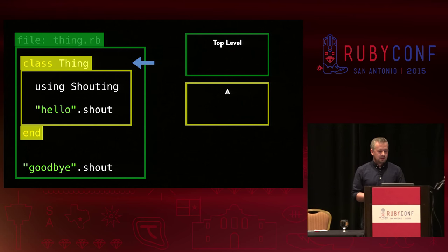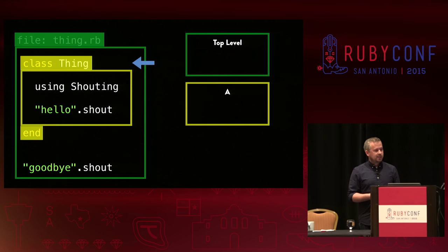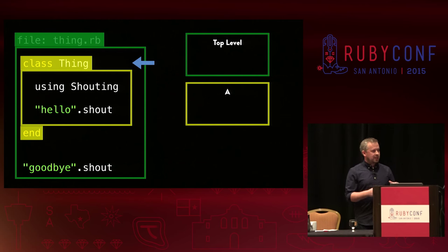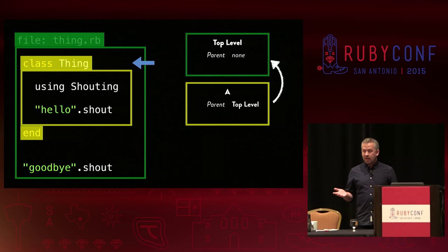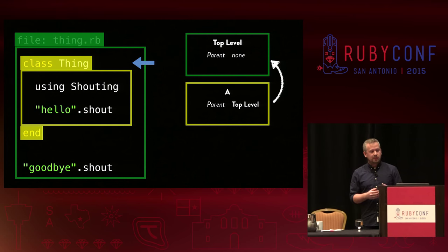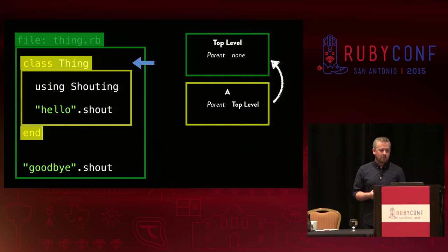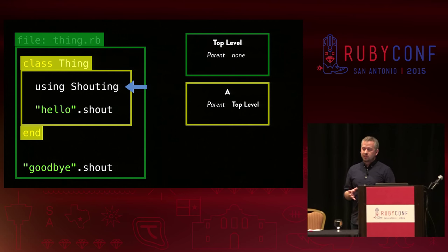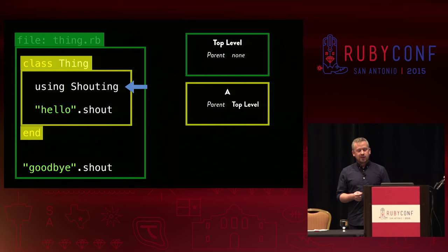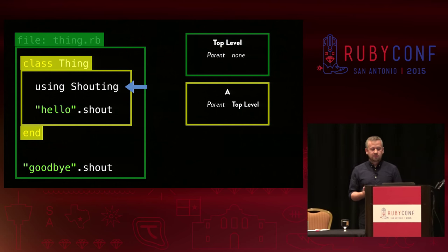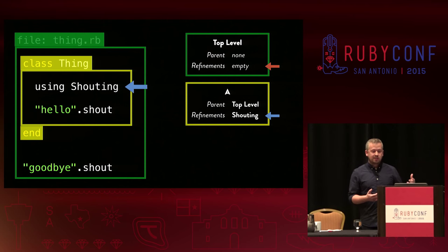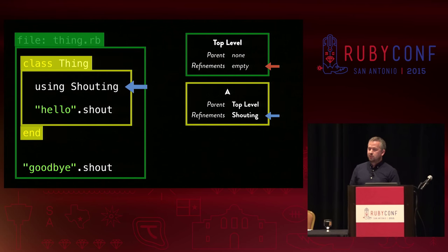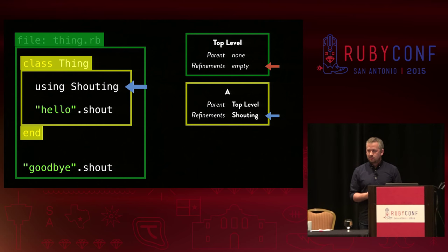We can call this lexical scope A — it doesn't actually have a name. Visually it makes sense to show them as nested, but behind the scenes the relationship is modeled by each scope linking to its parent. So A's parent is the top level scope, and the top level scope has no parent. As Ruby processes all the code within this class definition, the current scope is now lexical scope A. When we call using, Ruby stores a reference to the refinement within the current lexical scope — we can say that within lexical scope A the refinement has been activated. There are no activated refinements in the top level scope, but our shouting refinement is activated for lexical scope A.